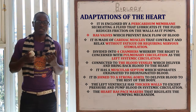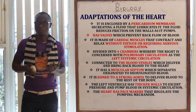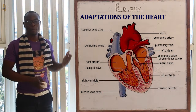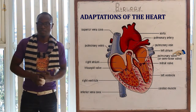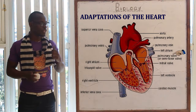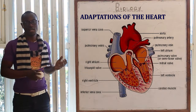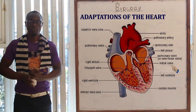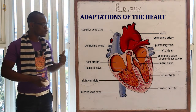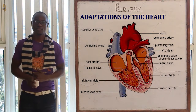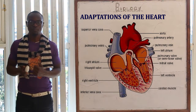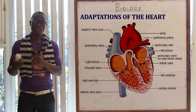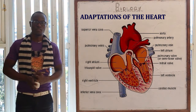The heart also has valves which prevent the backflow of blood. On the upper part of the heart it has semilunar valves on both sides, while on the lower part it has the tricuspid and the bicuspid valve. The easiest way to remember these valves is that on the right side is the tricuspid, and on the other side is the bicuspid valve.